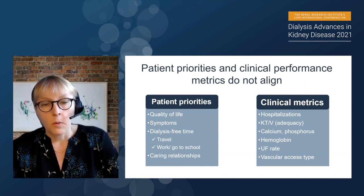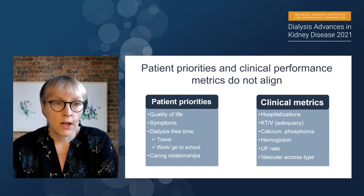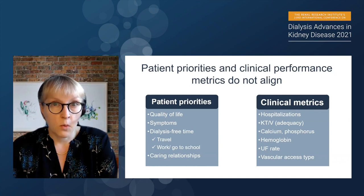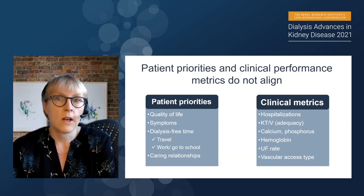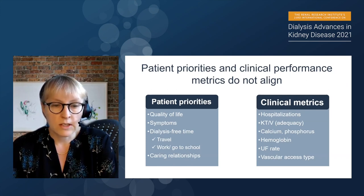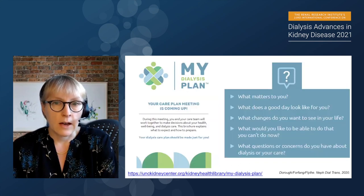In practice, patient priorities and clinical performance metrics don't align particularly well. Patients care about quality of life, symptoms, quality of dialysis-free time, ability to travel, work, or go to school, and caring relationships in the clinic. But what we measure includes hospitalizations, blood clearance, calcium, phosphorus, ultrafiltration rate, and vascular access type. What if we could take these patient priorities and use them to help us achieve the clinical metrics? Let's think about how we might do that in volume management.